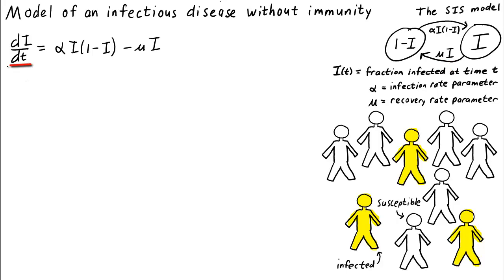The resulting differential equation is di/dt equals alpha times i times (1 minus i) minus mu times i.